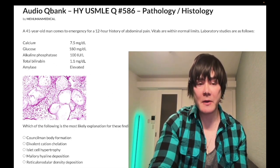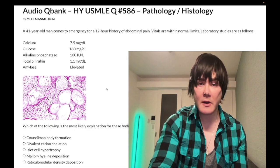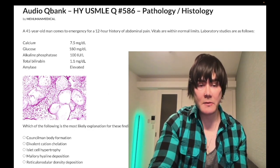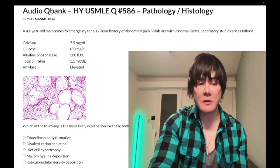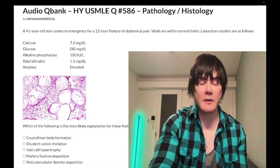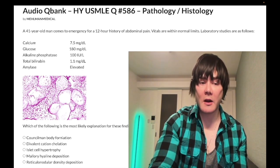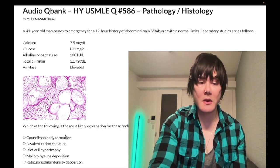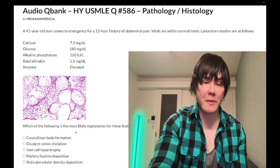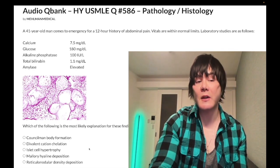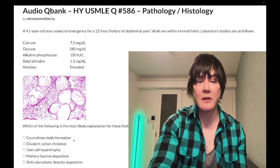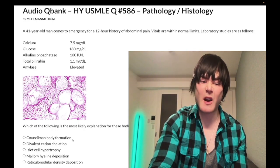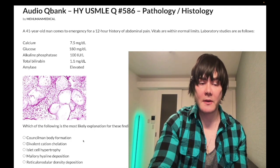We have this histology image — if you have no idea what you're looking at, that's okay. The question asks: which of the following is most likely the explanation for these findings? Answer choice A, Councilman body formation, is wrong. Councilman bodies have near-zero yield. They refer to eosinophilic necrotic hepatocytes seen in viral hepatitis and yellow fever — wrong answer.